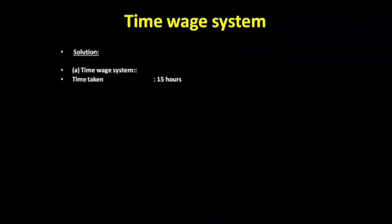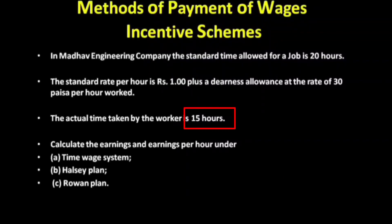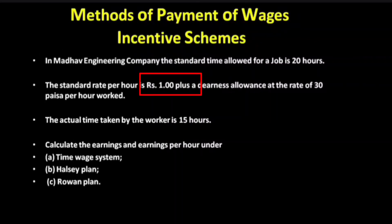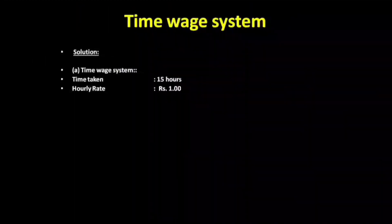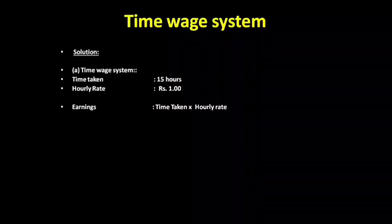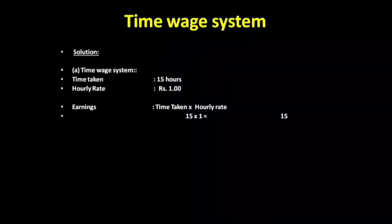If we are using a time-based system for 15 hours at 1 rupee per hour, with DA as extra, we will calculate earnings. Earnings equals time taken into hourly rate, so 15 hours into 1 rupee equals 15 rupees.